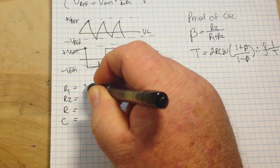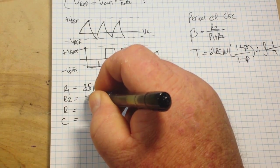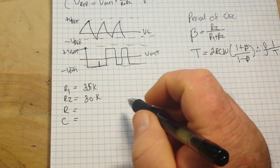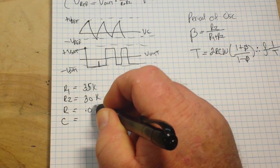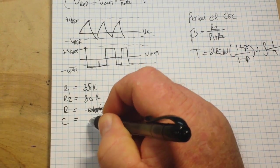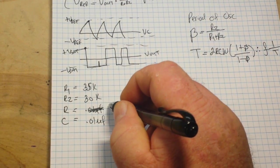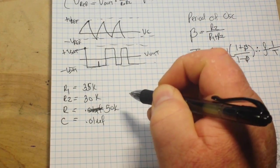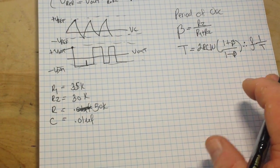We'll say R1 is 35k, R2 is 30k, C is 0.01 microfarads, and R is going to be 50k. Okay? So now that we have that,